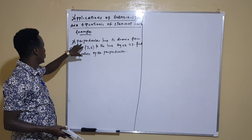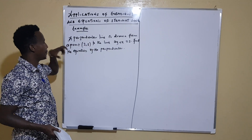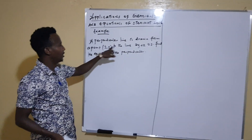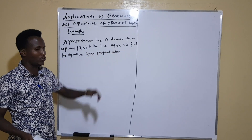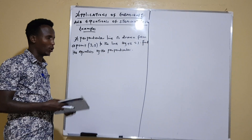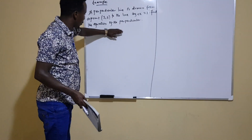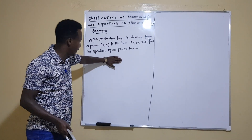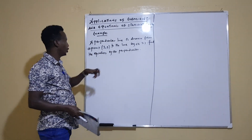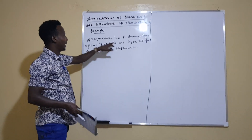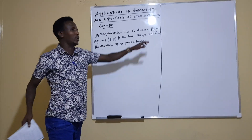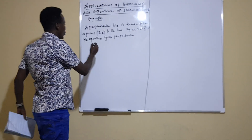This is the first example. As you can see on the board, we have a perpendicular line. We are told a perpendicular line is drawn from a point (3, 5) to a line whose equation is 2y plus x equals 3. You are asked to find the equation of the perpendicular. Remember, we have learned the properties of perpendicular lines in our previous class. In this question, you are given a point and another line.